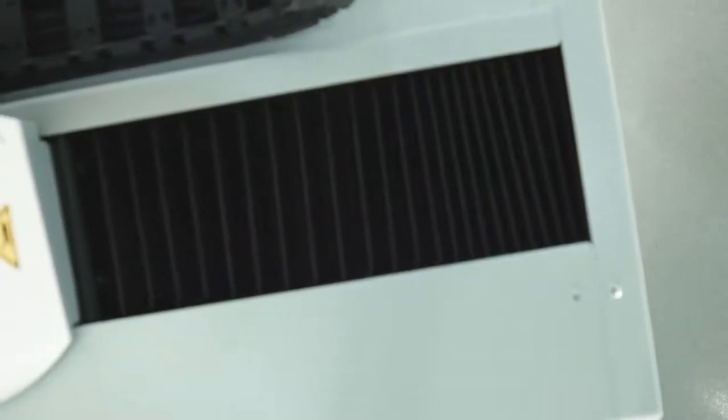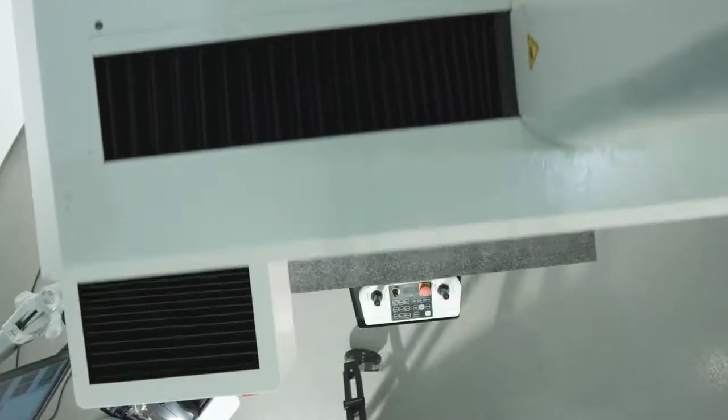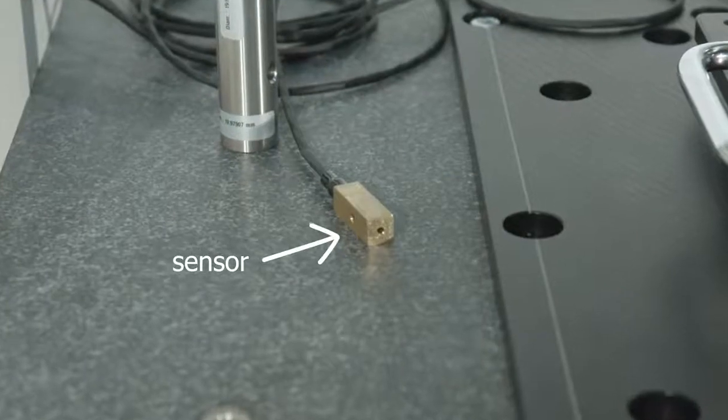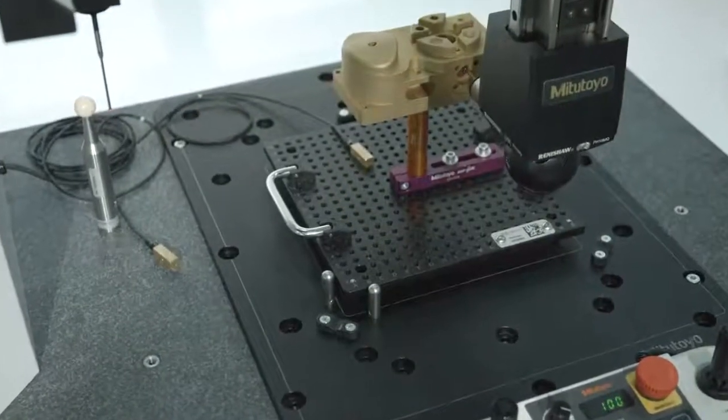MyStar features Mitsutoyo's proprietary scale system designed to operate while subjected to severe airborne contaminants like dust, coolant, and oil. MyStar also includes temperature compensators guaranteeing accuracy through the widest temperature range for a shop floor CMM.